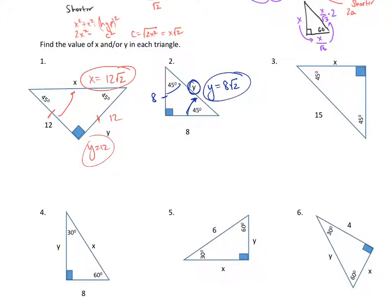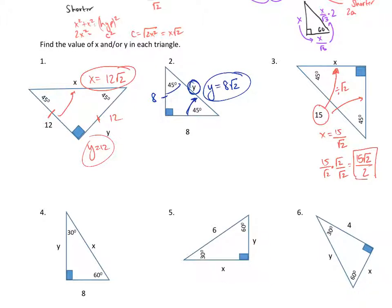Moving on to the next one: we have 15 at the hypotenuse and need to find the shorter leg. Since the hypotenuse goes to a shorter leg, we divide by the square root of 2. So x equals 15 divided by the square root of 2. We need to rationalize the denominator by multiplying the top and bottom by root 2, giving us 15 root 2 over 2 as the final answer.